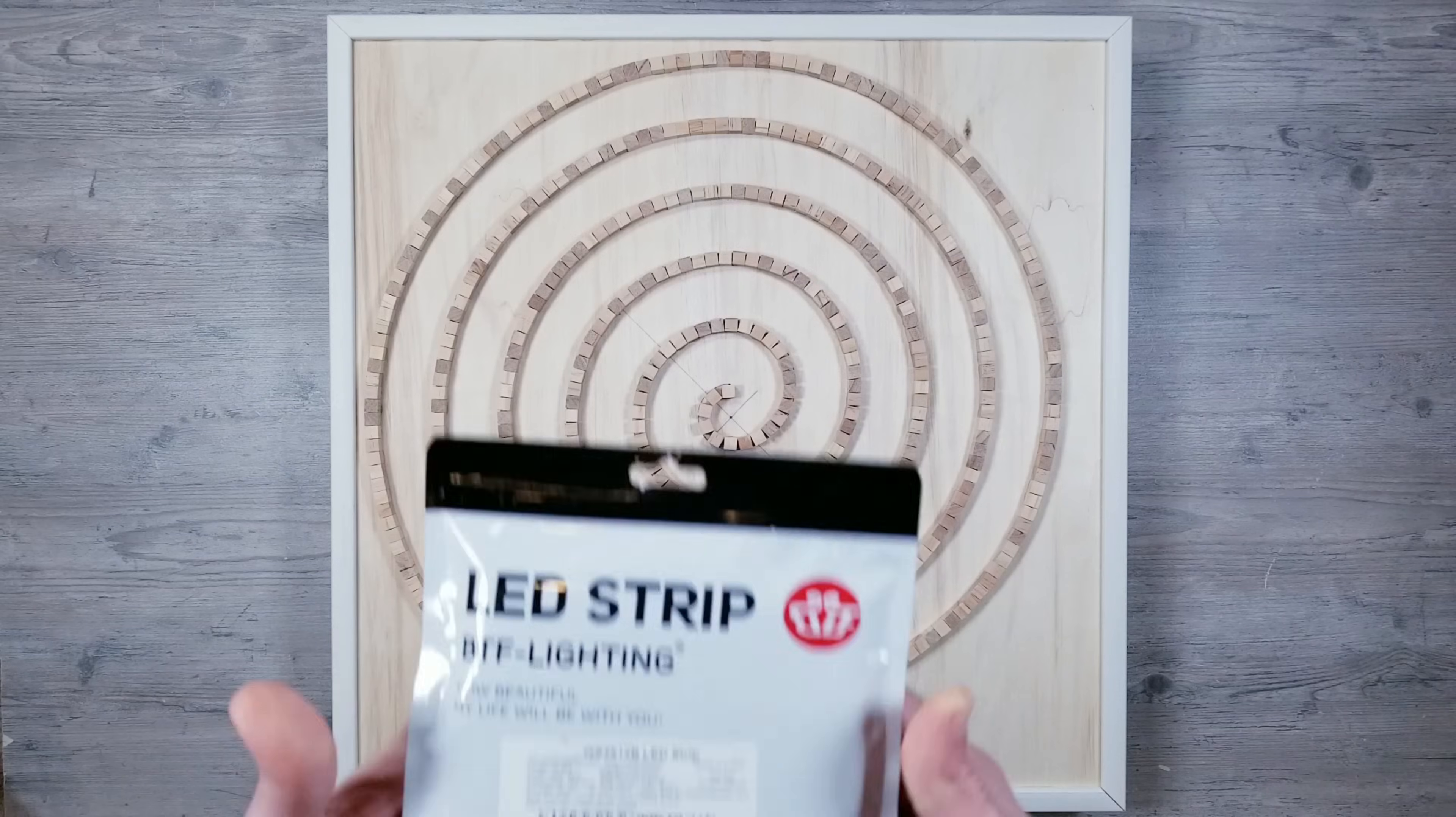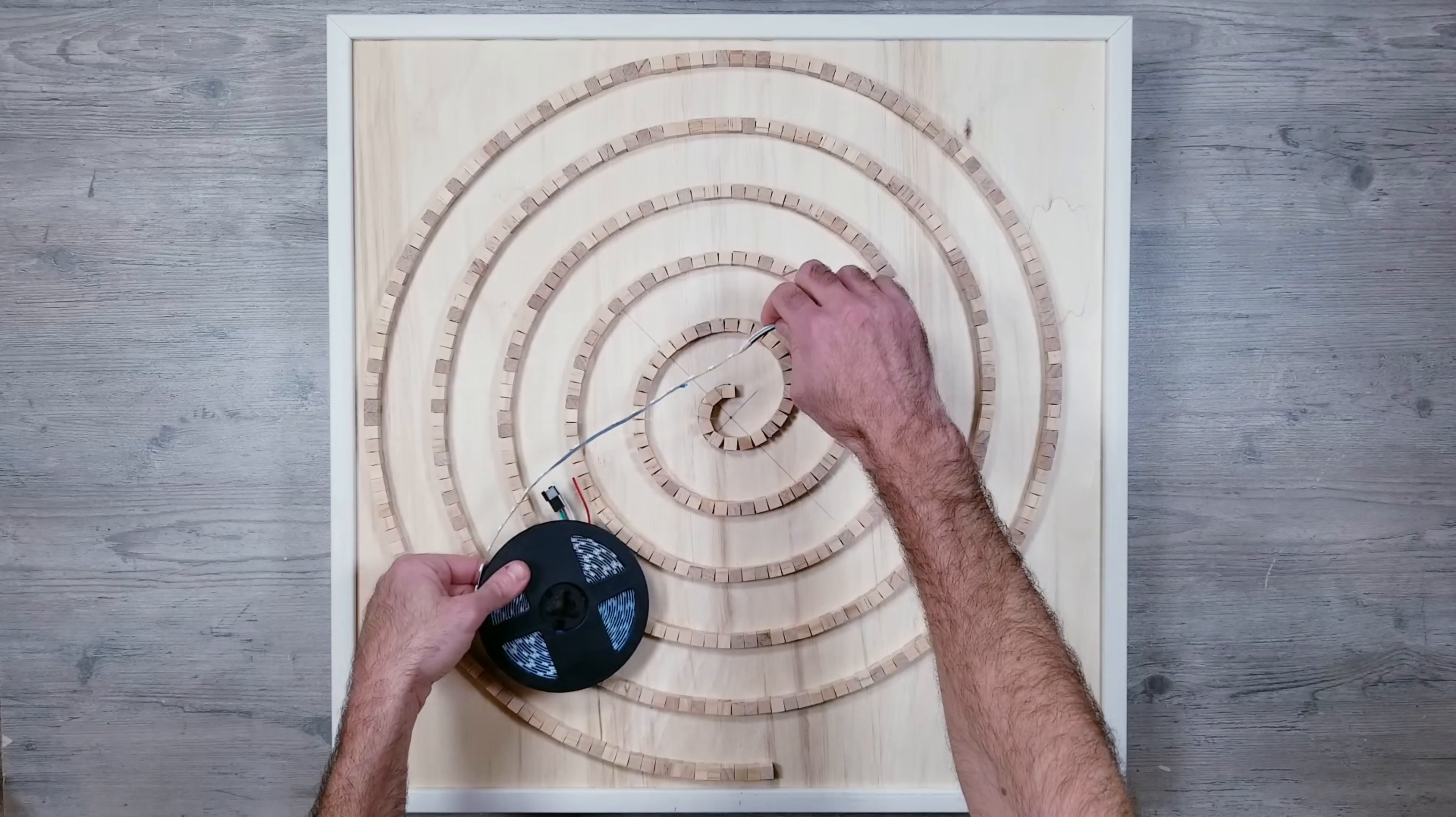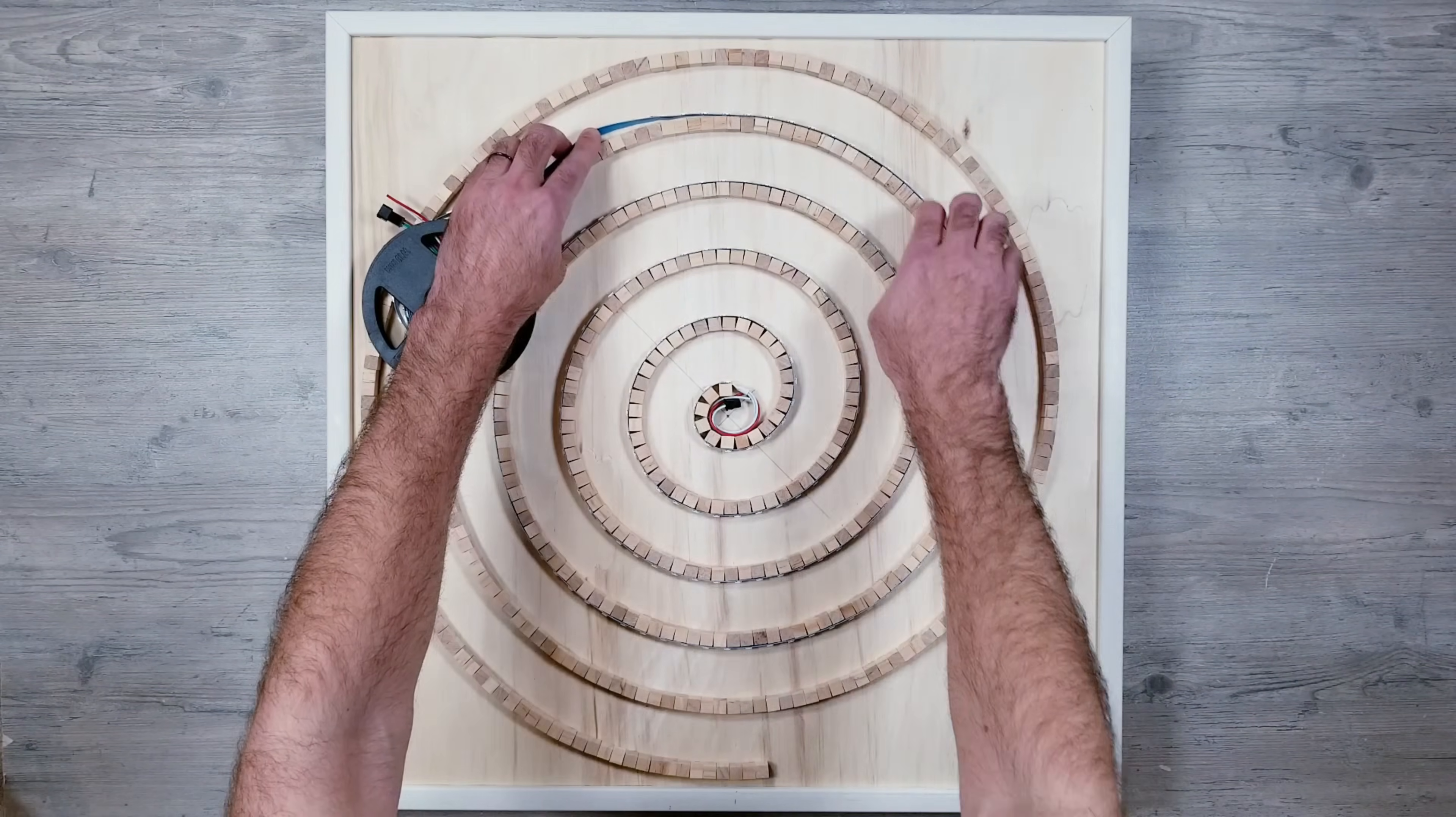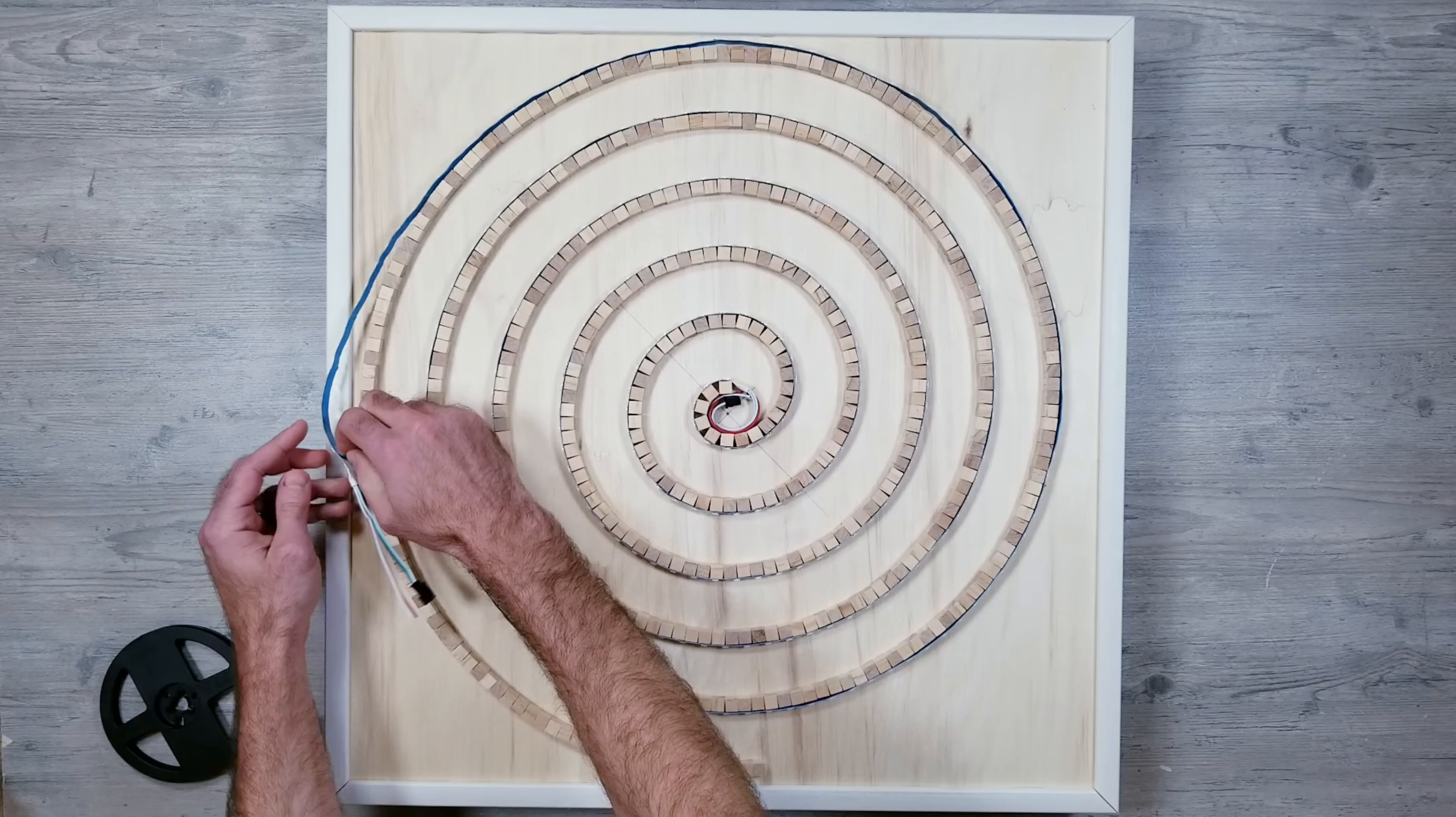Moving on to the lights, and you really could use whatever you want, but I had some extra WS2812B strips laying around that I'll be using. These are 5 meters long and have 60 LEDs per meter. I'm going to have the beginning of the strip start at the center and work my way out. Now I definitely could have planned this better, but I ended up making the spiral a little bit too long compared to where the 5 meter strip stopped, but this is a perfect time to bring up another point.